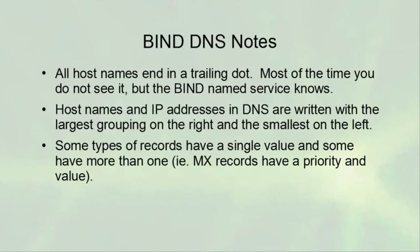Some types of records have a single value and some have more than one. MX records have a priority and a value — they take a domain name, give you a priority, and give you a hostname of a machine you can talk to for sending mail. There are also SOA records and other records that have multiple different pieces.